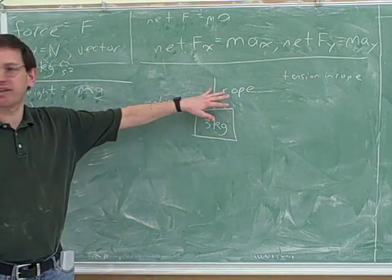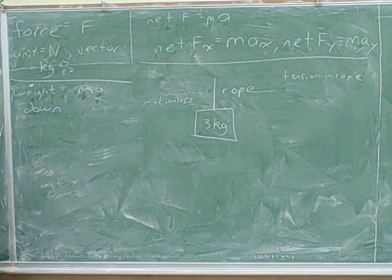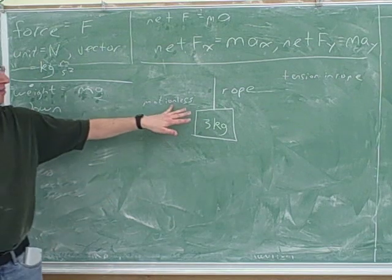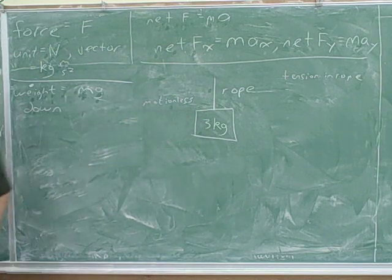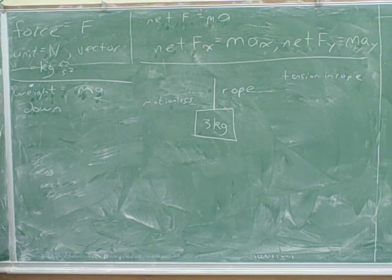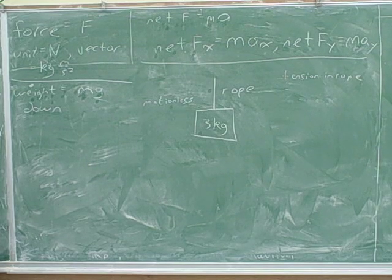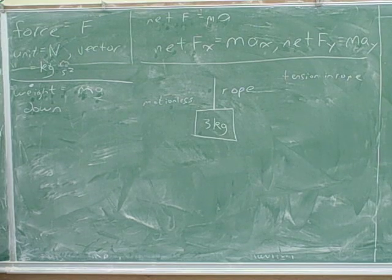Let's say that we have an object hanging from a rope, and it's being held motionless by the rope. The question is to find the tension in the rope. We want to work this out mathematically and technically. The first thing we have to do is draw our free body diagram and identify all the forces on the object.